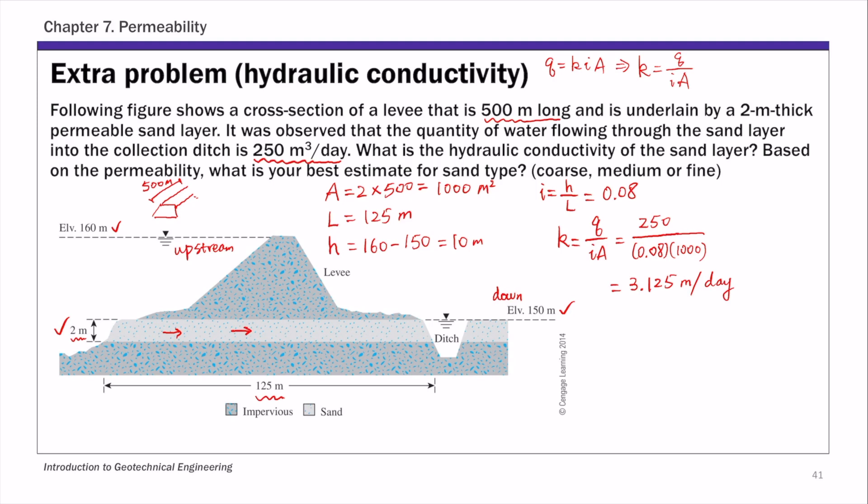We can also convert this into centimeters per second. This equals 3.125, and from meters to centimeters, that's 100 centimeters per meter. Per day, we can convert to seconds: 60 times 60, that's 3,600 seconds per hour, times 24 hours per day.